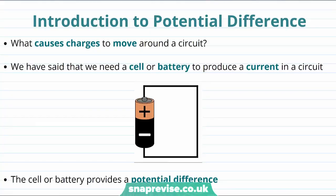So let's introduce this concept of potential difference by asking the question: what causes charges to move around a circuit? We have said before that we need a cell or battery to produce a current in a circuit. So here we have a picture of a circuit.